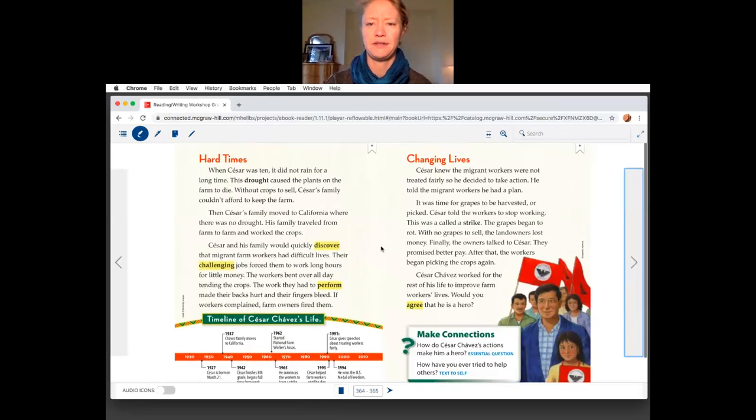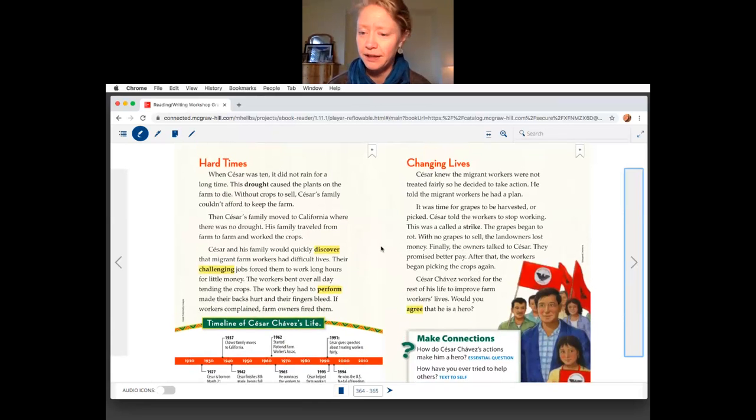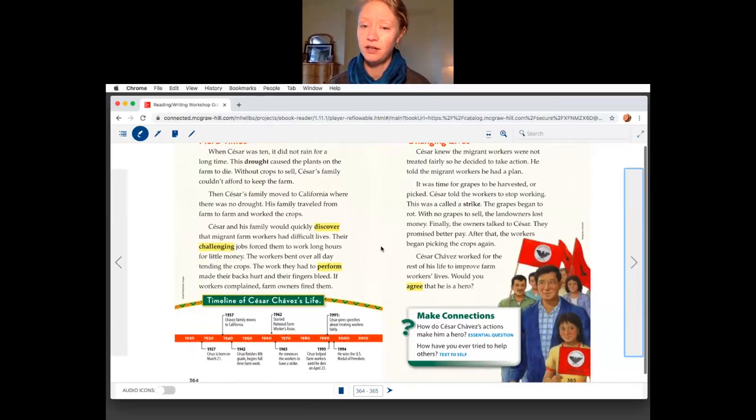Changing lives. Cesar knew the migrant farm workers were not treated fairly, so he decided to take action. He told the migrant workers he had a plan. It was time for the grapes to be harvested or picked. Cesar told the workers to stop working. This is what's called a strike.